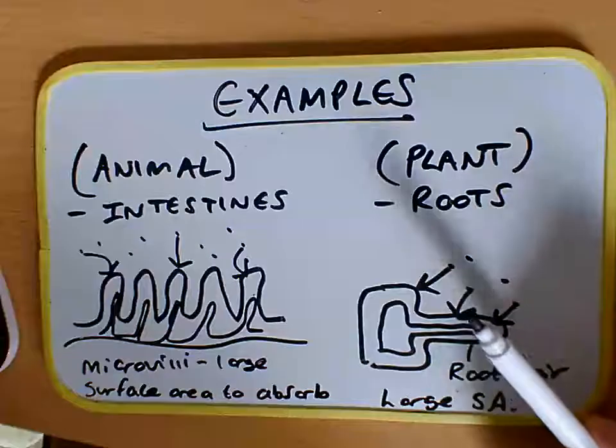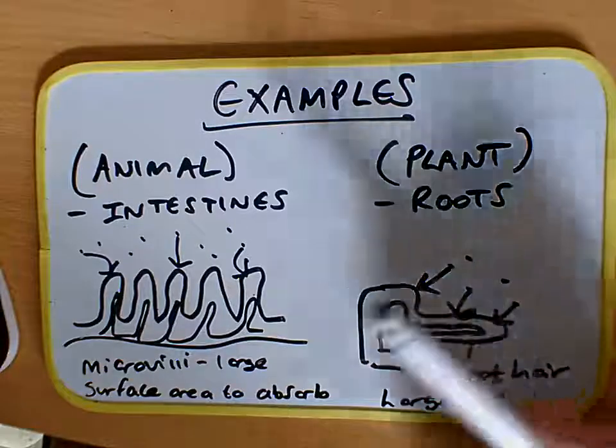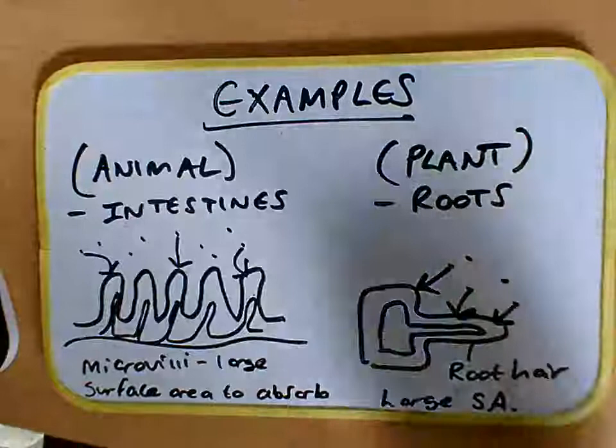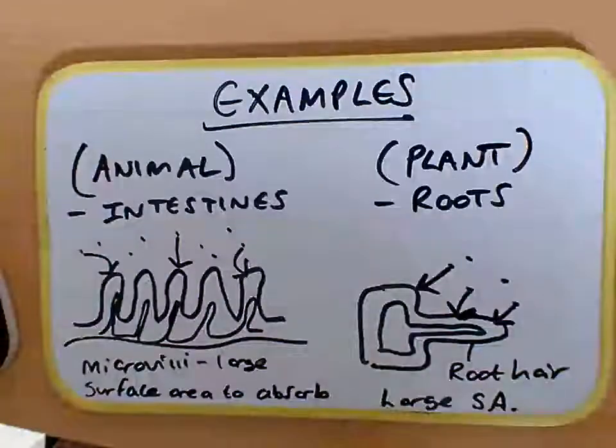So active transport is the movement of substances from low to high concentration, extra energy is needed. Good examples: the intestines in animals and roots in plants.